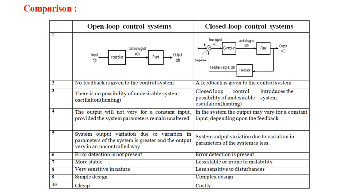The first point is the block diagram of the open loop system. Here you can see there is a controller and a plant — which I already discussed in the last video. You can apply input and get output, that is our control signal. You can observe that there is no feedback signal in this open loop system.